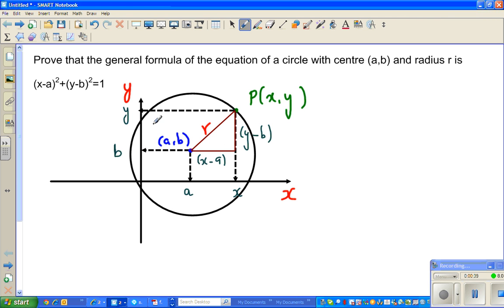And I've taken any arbitrary point on the circle with coordinates (x,y). Point P(x,y). So the x-coordinate is x here and the y-coordinate is y.